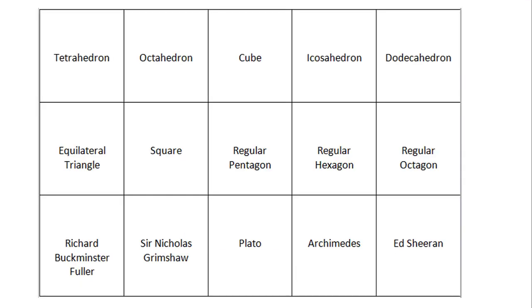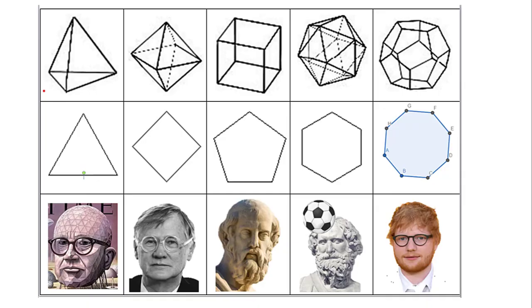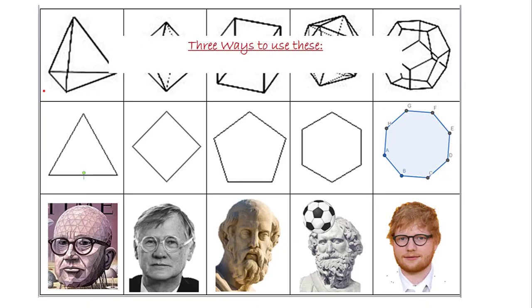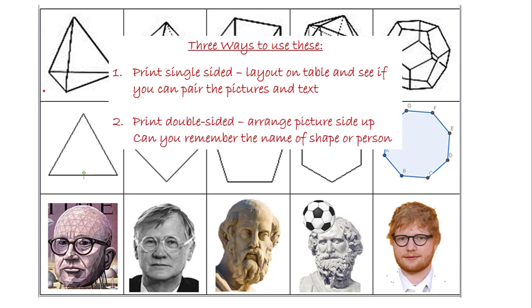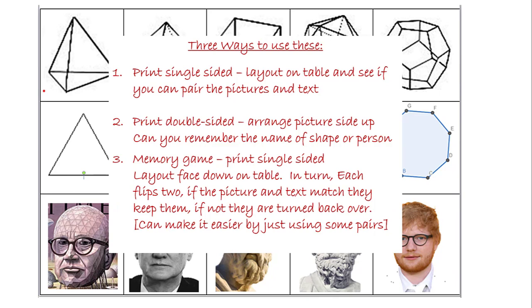These files are available online. On one side, there are the names of the shapes, solids and people that we've discussed today. On the other, there are the images. Three ways to use them. You can print them single sided. See if you compare the pictures and text. Print double sided. Picture side up. Can you remember the name of the shape or person? And the final memory game. They're printed single sided. You turn over a pair. If they match, you get to keep them. Otherwise, the next player takes a turn.